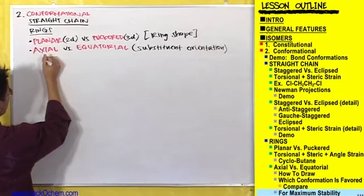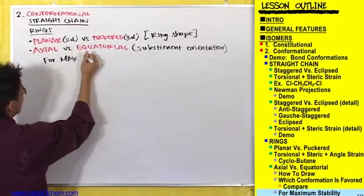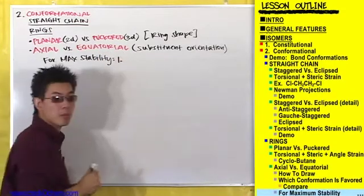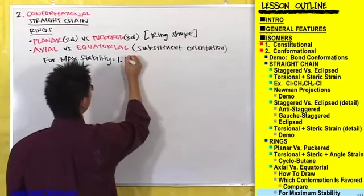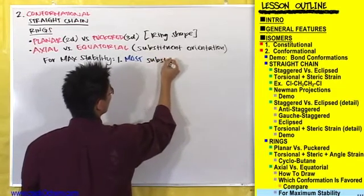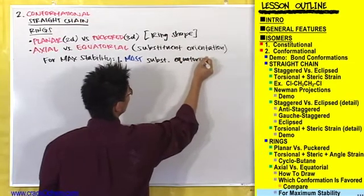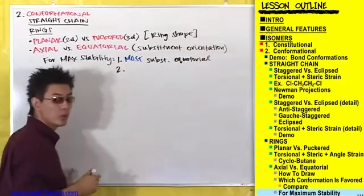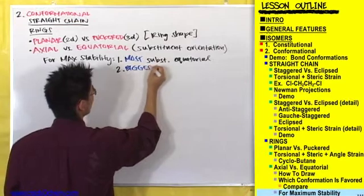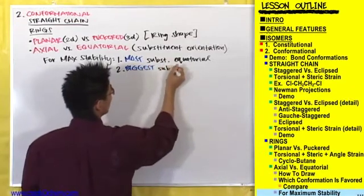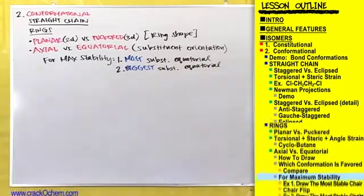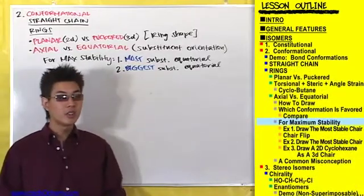For max stability, you want number one: most substituents to be equatorial, and number two: the biggest substituents to be equatorial. Let's see how these two rules apply.